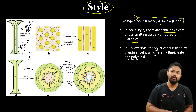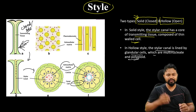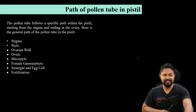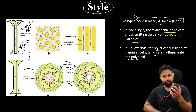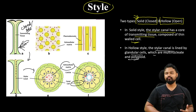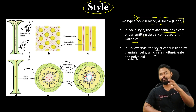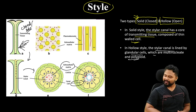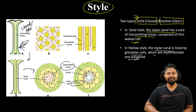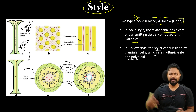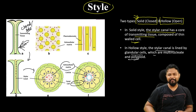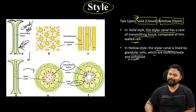So this was all about the structure of stigma and style. The next class will be on the Path of Pollen to Ovum and Double Fertilization — the last topic of this unit. Thank you so much for watching. If you like the video, subscribe to my channel and share it. You can also check my website at www.ahmiyabio.com. Meet you in the next class. Bye-bye.